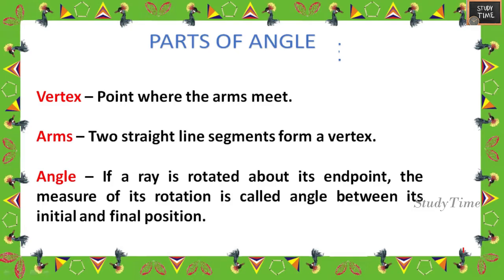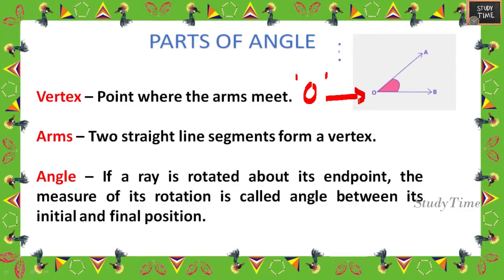Next, we'll see what are the parts of an angle. The first part is the vertex — the point where the arms meet is called the vertex. Here, O is the vertex. The second part is the arms — two straight line segments form a vertex. From the vertex, OA and OB are the arms.